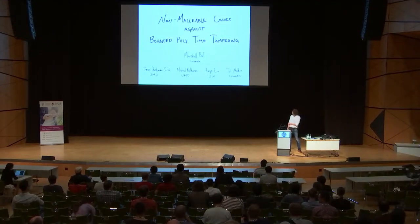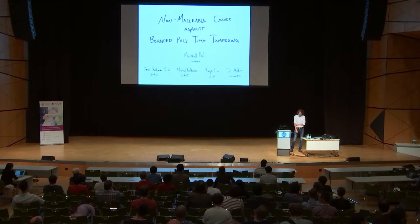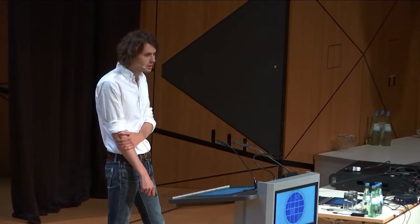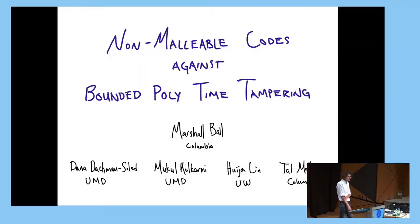I'd like to tell you guys how to construct non-malleable codes against bounded polynomial time-tampering. This is joint work with Donna Darkman-Soled and Mukul Kulkarni at UMD, Rachel Lynn at University of Washington now, and Tal Malkin, who is my advisor.